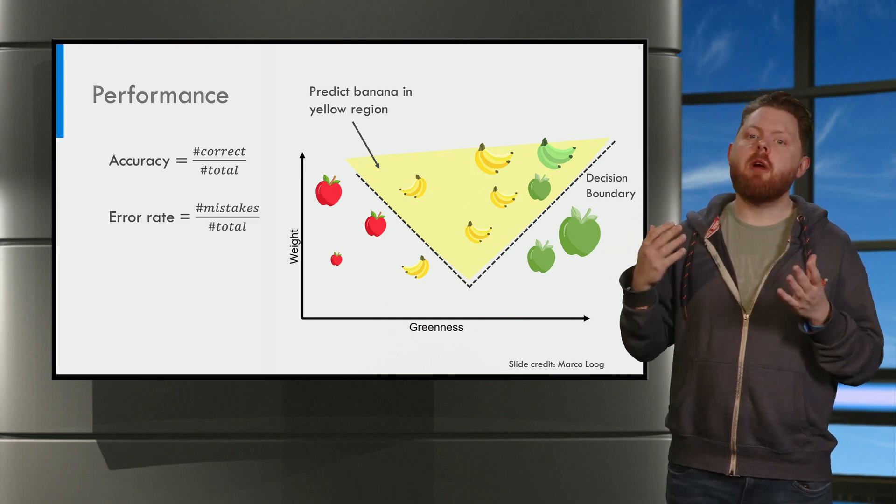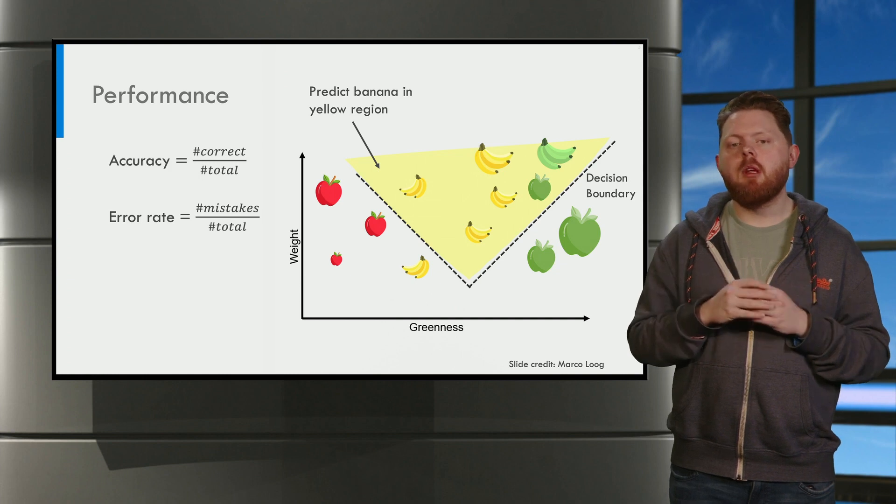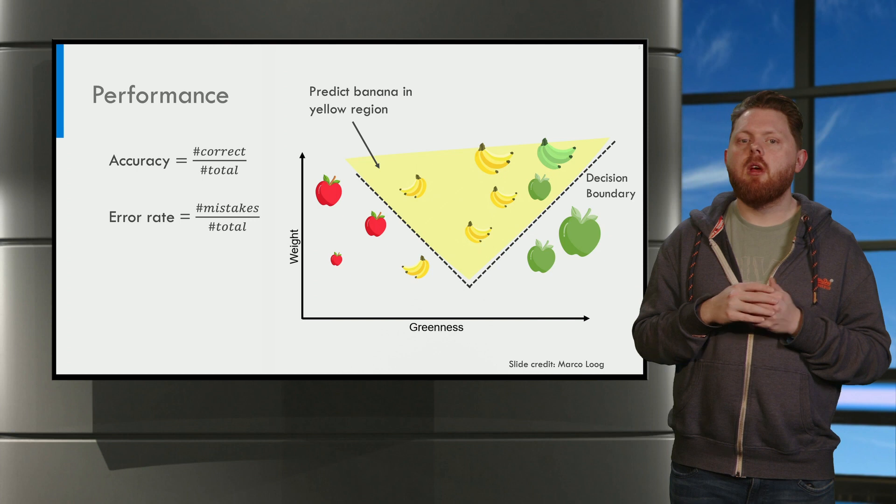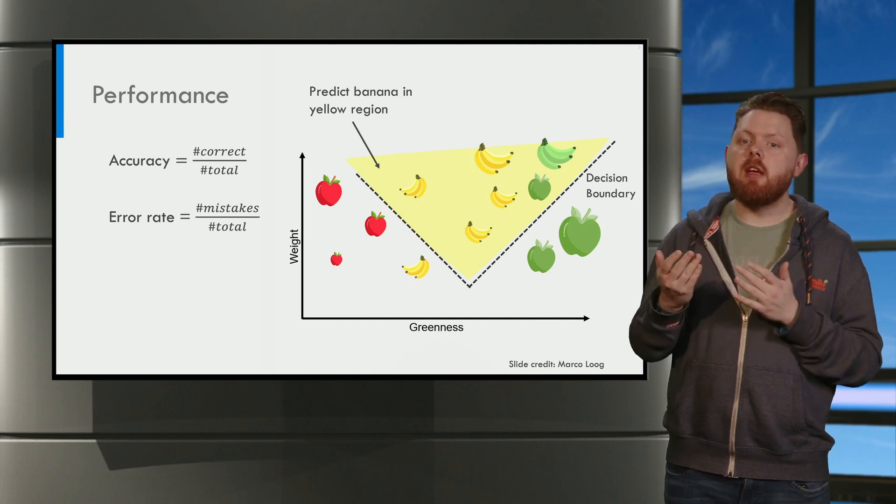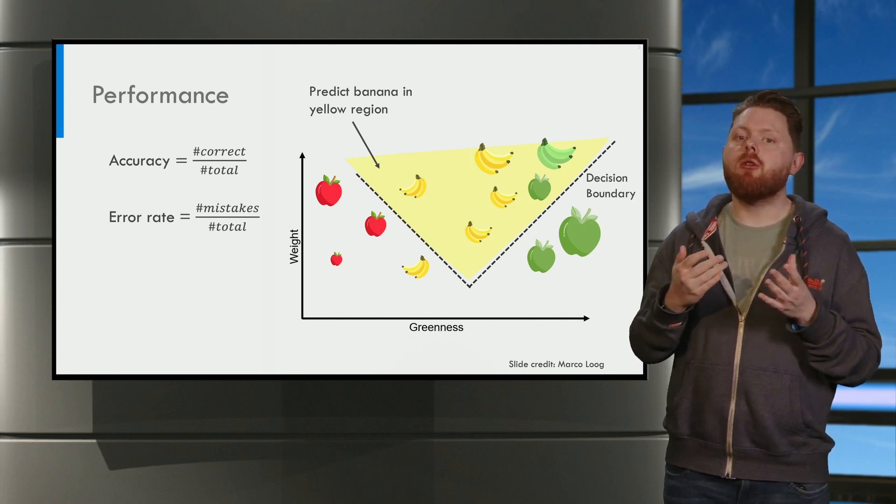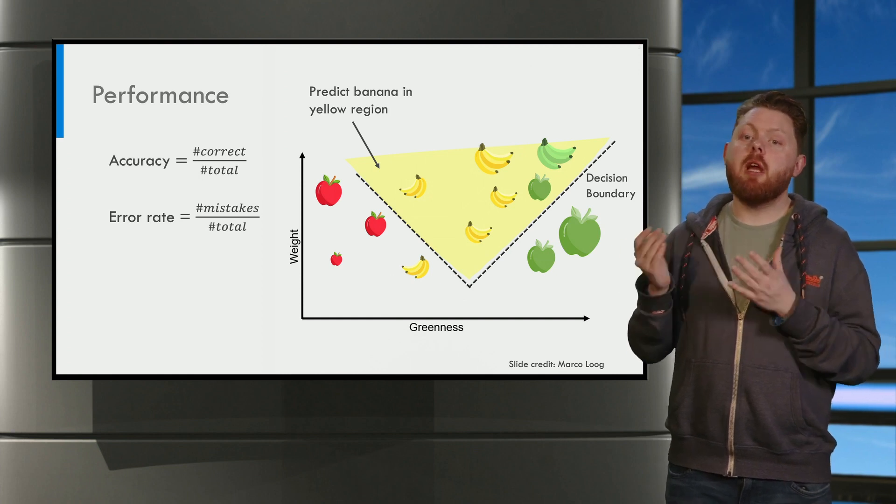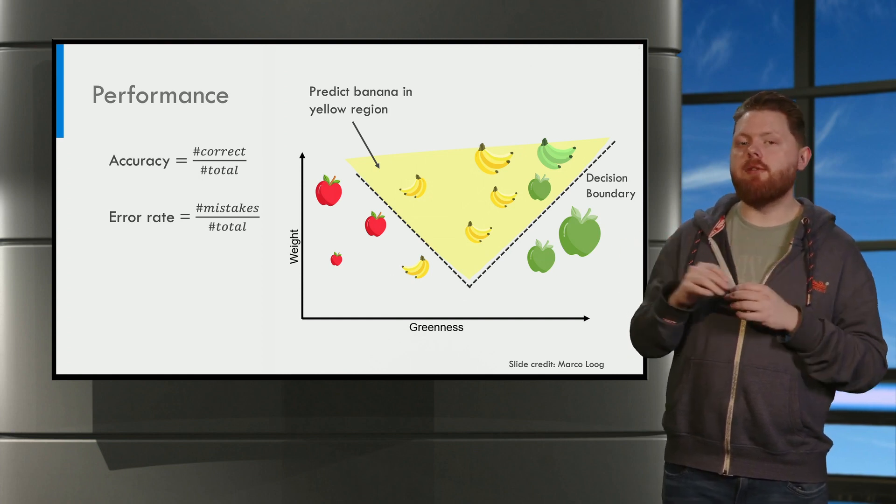We can also evaluate using the error rate. The error rate measures the opposite of accuracy. We count the number of mistakes and divide by the total to get to the error rate. This is the percentage of objects that are misclassified.